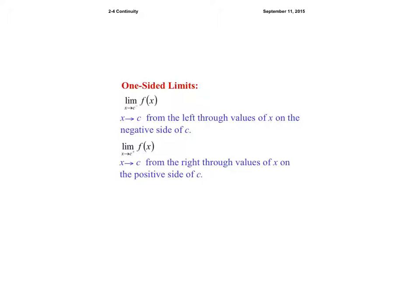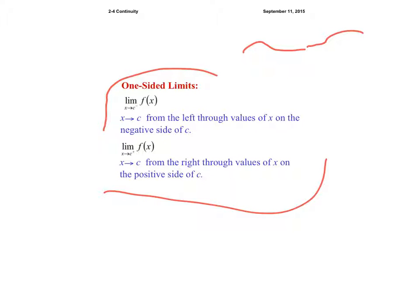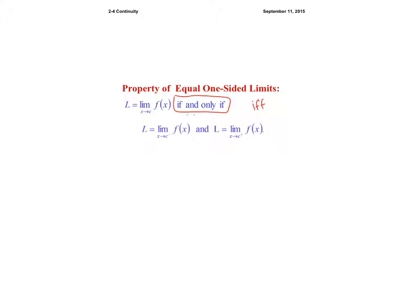For one-sided limits, I'll talk about it briefly since we already know what a one-sided limit is. A limit talks about approaching a point from both sides. As you approach C from the left side, we use a negative annotation. As you approach from the right side, we use a positive annotation. These are one-sided limits.